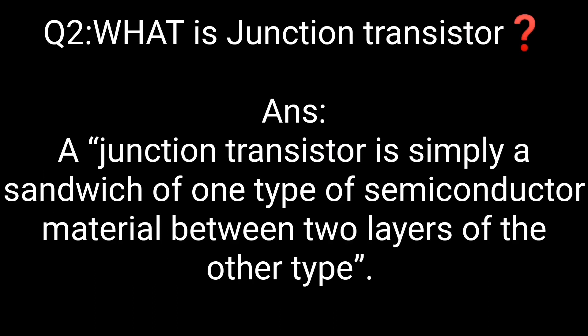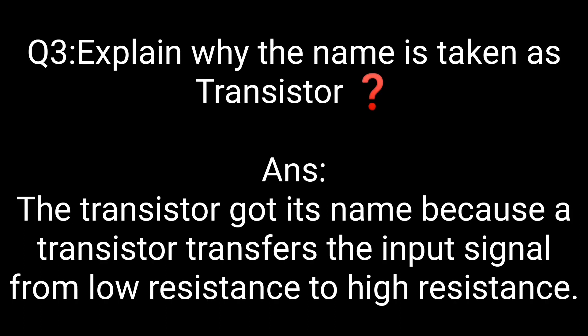What is a junction transistor? A junction transistor is simply a sandwich of one type of semiconductor material between two layers of the other type. Question number three: explain why the name is taken as transistor? The transistor got its name because a transistor transfers the input signal from low resistance to high resistance.